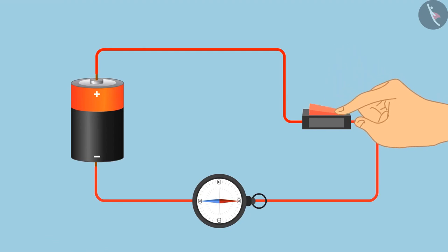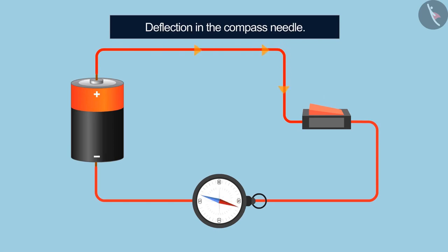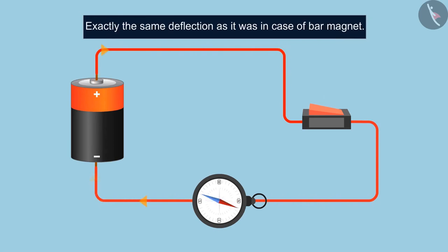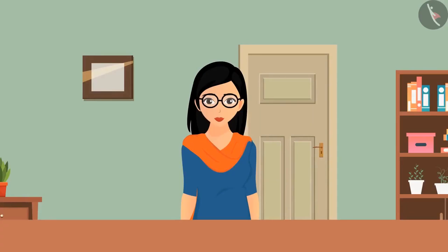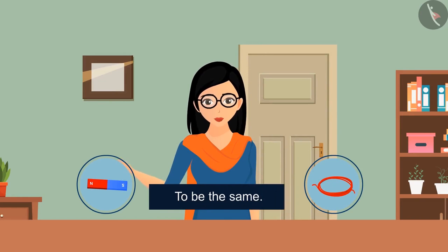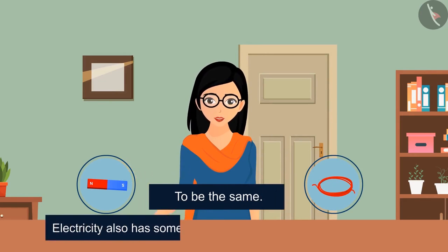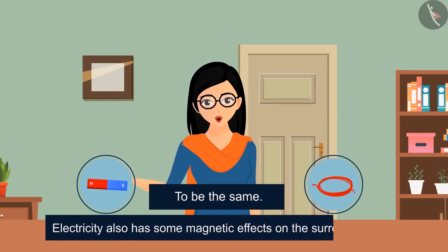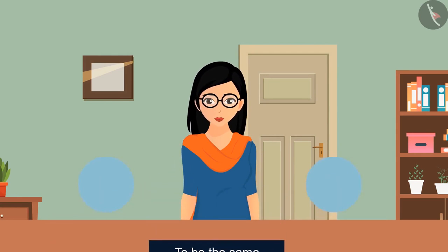As soon as we put on the switch, we see a deflection in the compass needle, exactly the same deflection as it was in the case of a bar magnet. We can consider the bar magnet and the current carrying wire to be the same, and it would be fair to say that electricity also has some magnetic effects on the surroundings.